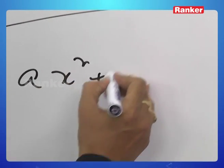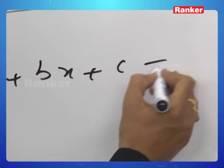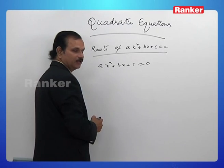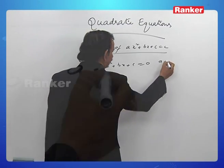ax² plus bx plus c equal to 0 is given, of course with a not equal to 0.